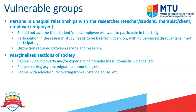The last category is marginalized sections of society, which is wide and varied and not an exhaustive list. Examples include people living in poverty, experiencing homelessness, or domestic violence; people seeking asylum or from migrant communities; and people with addiction or recovering from substance abuse. Any participants falling into these or related categories would be considered a marginalized and therefore vulnerable group. Hopefully this helps with the thinking process — are the participants in your research study in a vulnerable group? If so, there are certain things expected of you as a researcher.